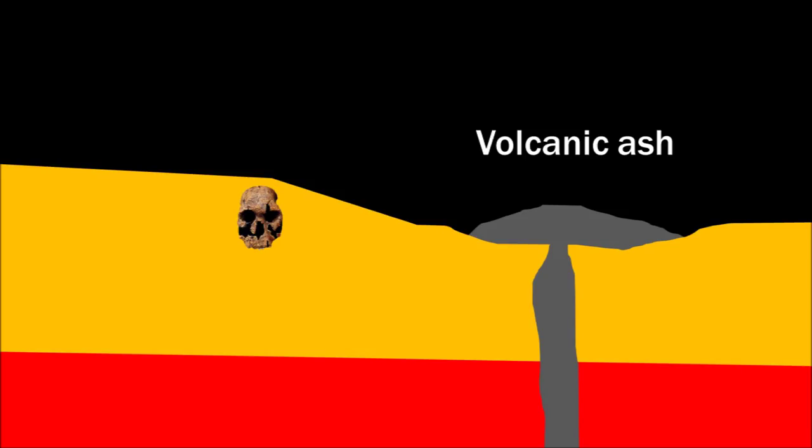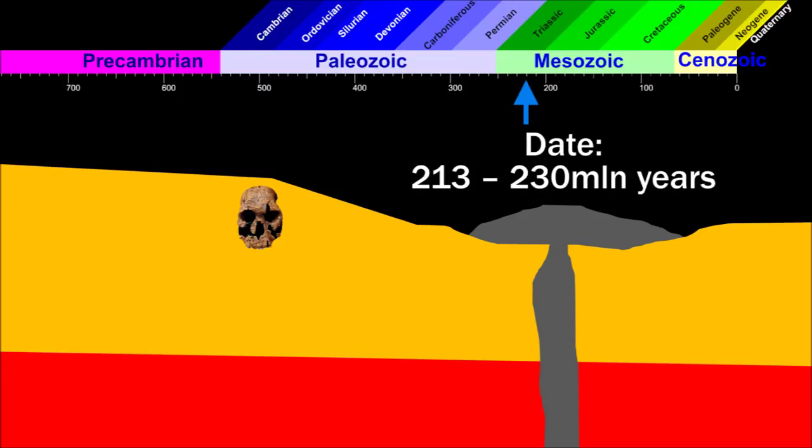Volcanoes are very useful for dating because the radiometric clock resets when the rock gets molten. So we can use that as an excellent dateable object. So the dating method was applied, and it was found to be between 213 and 230 million years old. Huh, so old? That can't be right.